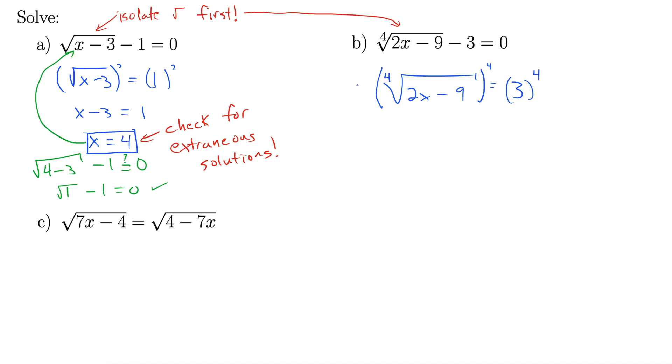Okay, what does that leave us with? Well, 2x minus 9 equals 3 to the 4th is 81. Now we're simply solving for x, so add 9 to both sides. 2x equals 90. x equals 45.